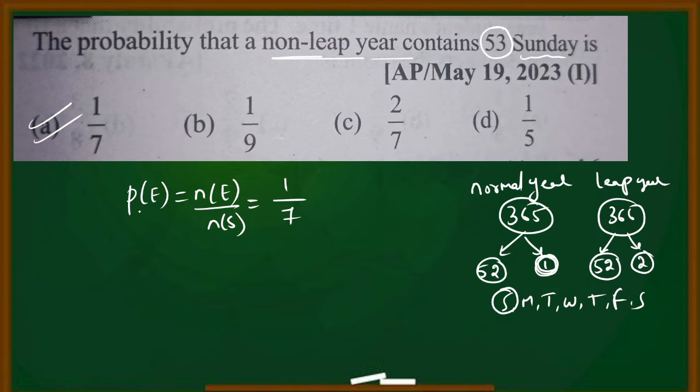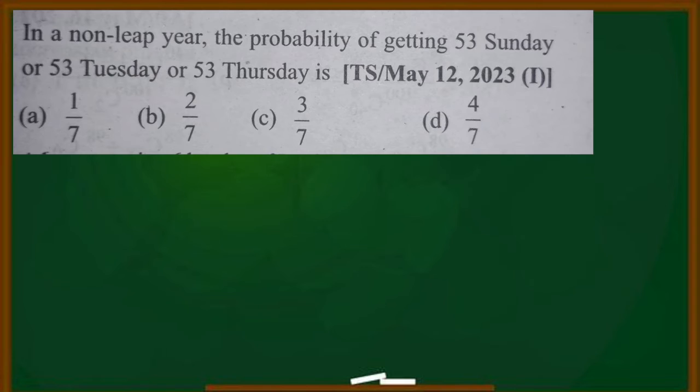Okay, that is for a non-leap year — the answer is 1 by 7. For a leap year, the answer is 2 by 7. Next question.